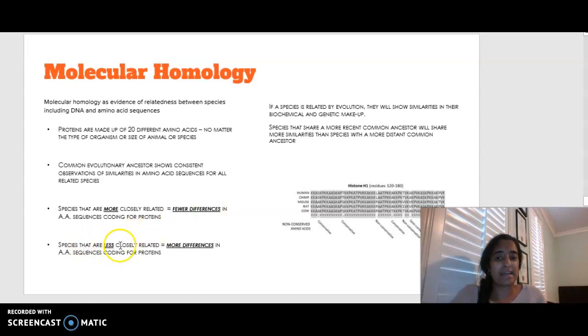And species that are less closely related are going to have more differences in the amino acid sequences that are coding for a particular protein. So if a species is related, if it shares a common ancestor, they're going to show more similarities in their biochemical and genetic makeup.